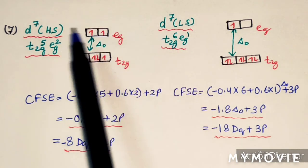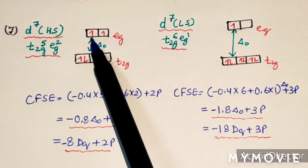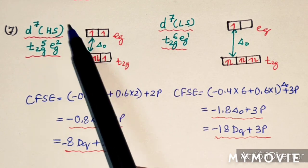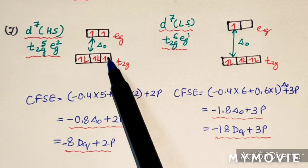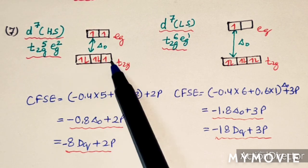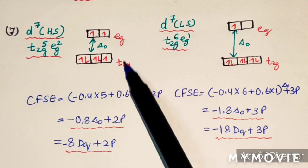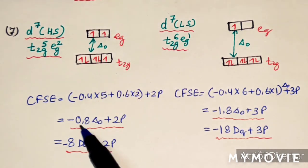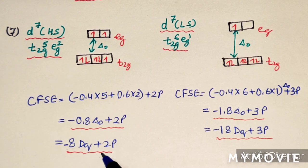For D7 configuration, in high spin (delta O is small), electrons fill giving configuration T2G5EG2. CFSE = −8 DQ + 2P.